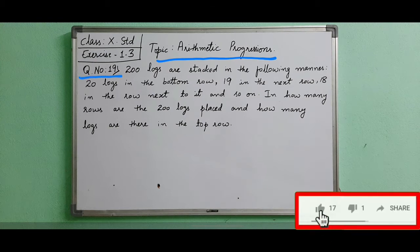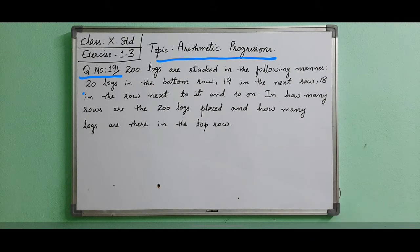200 logs are stacked in the following manner. 20 logs in the bottom row, 19 in the next and 18 in the next row next to it and so on. In how many rows are the 200 logs placed and how many logs are there in the top row?